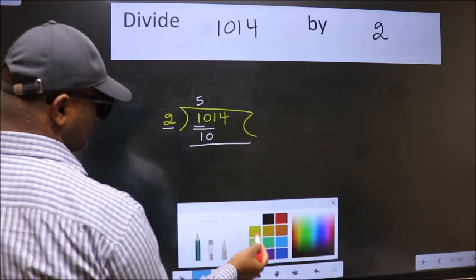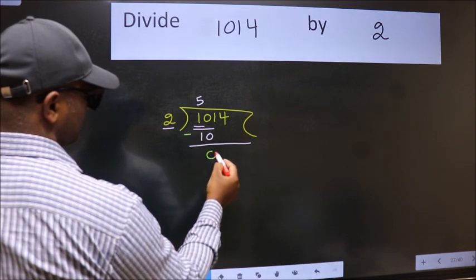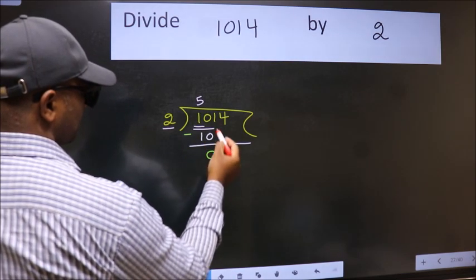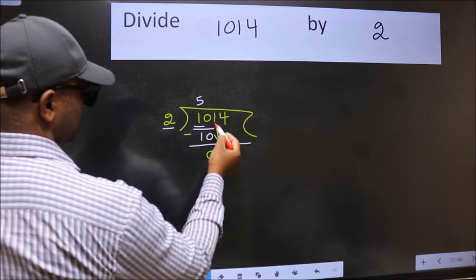Now we should subtract. We get 0. After this, bring down the beside number. So 1 down.